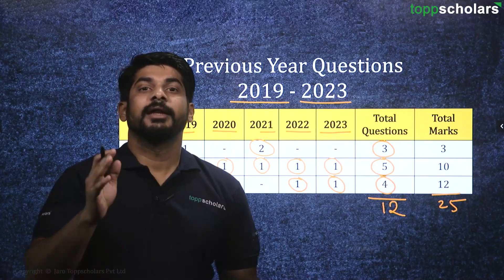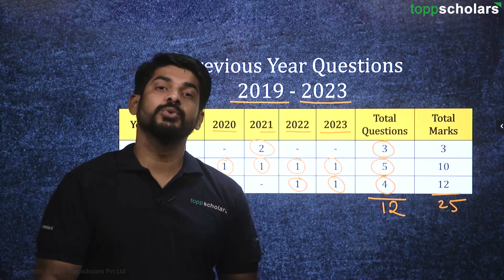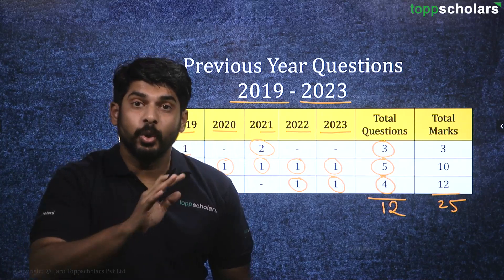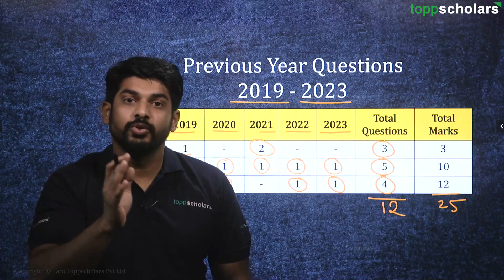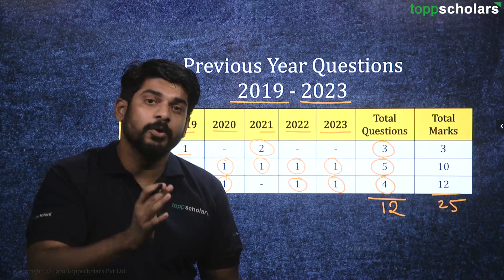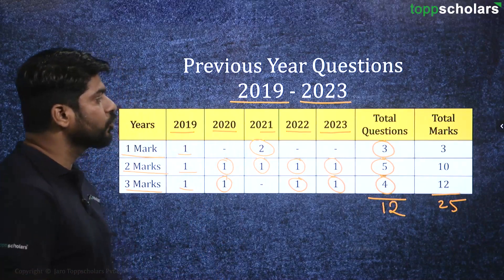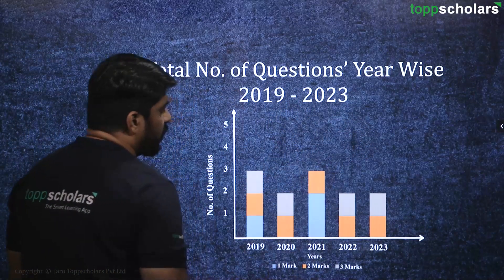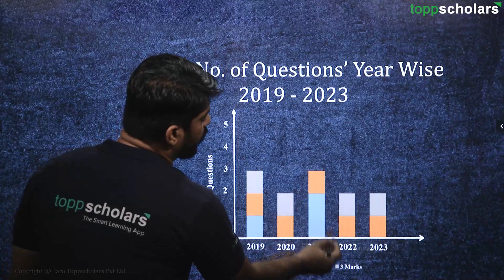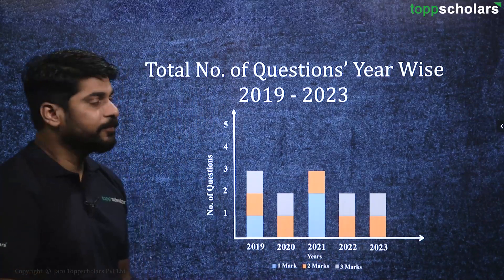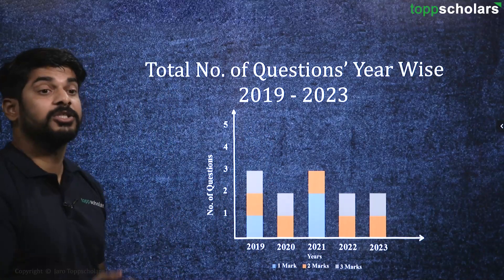Now let us move on and look at the questions that have been asked. What we are going to do is first look at the questions only, and then at the later stage of this lecture we will see the solutions for those questions — we will solve some of them. There is also a graph which indicates the same statistical data in graphical form, showing year-wise how many questions were asked for different marks.